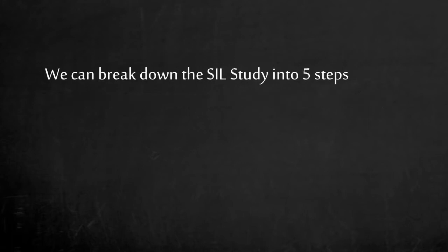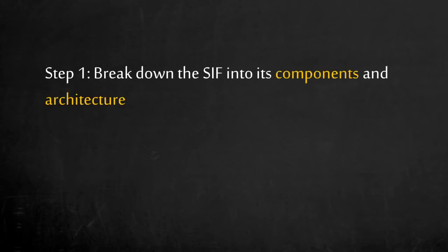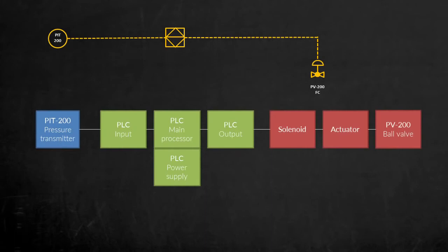Let's break down the SIL study into five steps. Step 1. Break down the safety instrumented function into its components and architecture. Let's take a look. We can break down this SIF into the pressure transmitter, programmable logic controller, and final element.